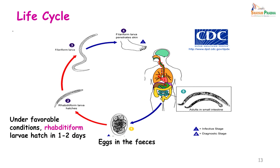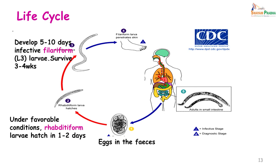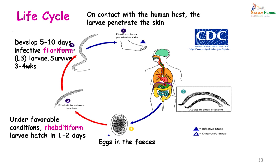The rhabditiform larvae develop into the slender infective filariform larvae over the next 5 to 10 days. Filariform larvae can, under the correct environmental conditions, stay alive for up to 3 to 4 weeks. It is this filariform larva which penetrates the skin.